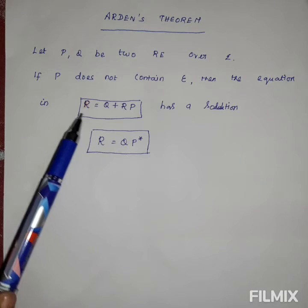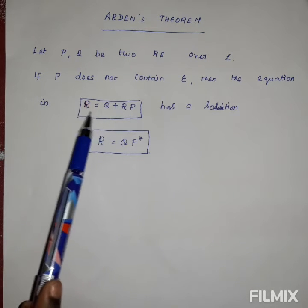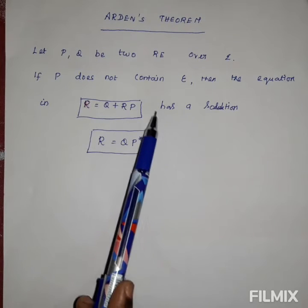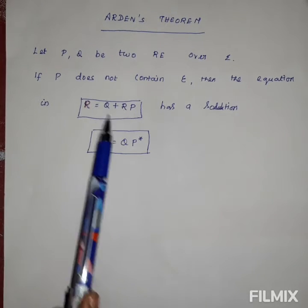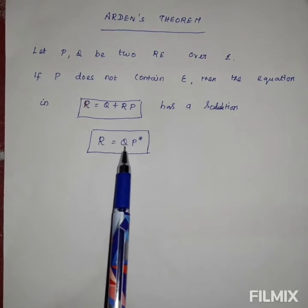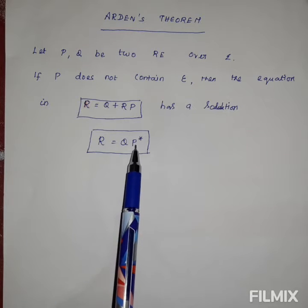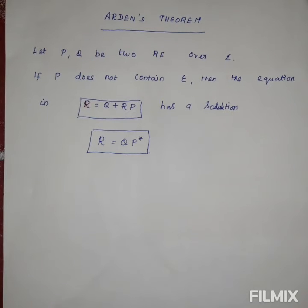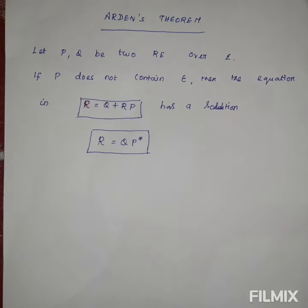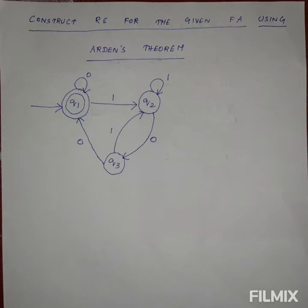We have to derive the equation in the form R = Q + RP, and then we can simplify this regular expression into R = QP*, where P* is the Kleene closure containing the sequence of symbols with zero or more repetitions. Now we will see how we can construct the regular expression from the given finite automata using this equation.